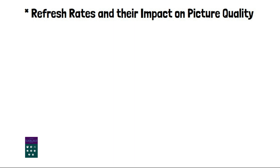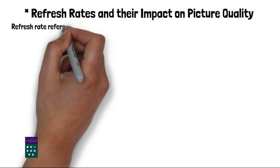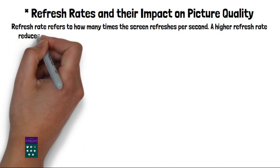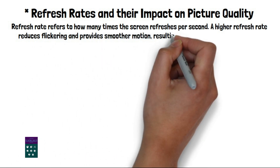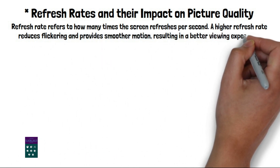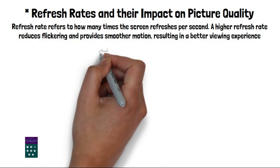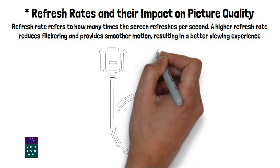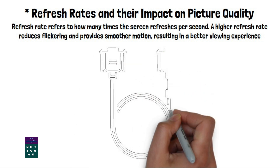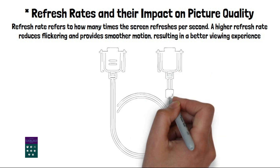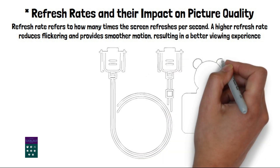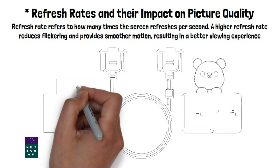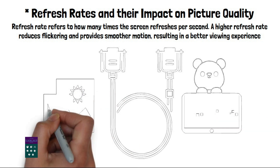Refresh rate refers to how many times the screen refreshes per second. A higher refresh rate reduces flickering and provides smoother motion, resulting in a better viewing experience. VGA typically supports refresh rates of 60 Hz, meaning the screen refreshes 60 times per second. While higher refresh rates are now common in modern displays, VGA's refresh rate remains adequate for most applications.